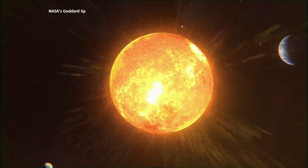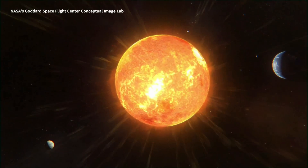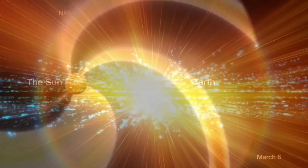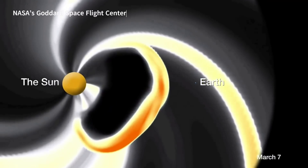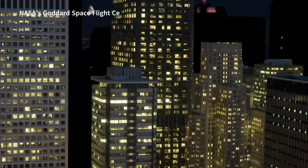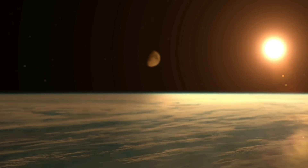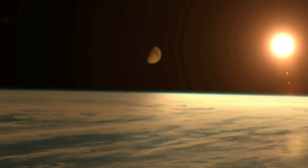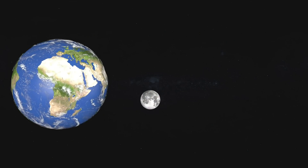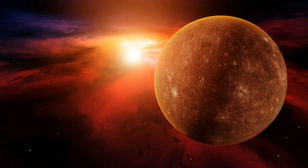The 2012 solar storm was particularly intense, with a CME measuring approximately 2,500 miles wide. It traveled towards Earth at a speed of over 1,800 miles per second, which is much faster than the typical speed. If the storm had hit Earth, it would have caused widespread blackouts and disrupted communication systems, potentially causing billions of dollars in damage. However, the storm missed Earth by just nine minutes, thanks to a fortuitous alignment of the planets in our solar system. The storm passed by the planet and instead hit Mars, where it caused significant damage to the planet's thin atmosphere.